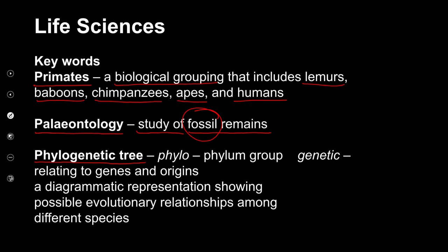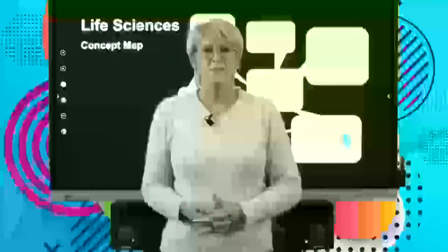Then we have phylogenetic tree — this is an important term. It's our evolutionary diagram. If we break the term up, phylo means phylum group, and the second part, genetic, means relating to genes and origins. Basically it's a diagrammatic representation, and what it shows is the possible evolutionary relationships amongst different species. We can see how closely related or how far related organisms are from the phylogenetic tree.